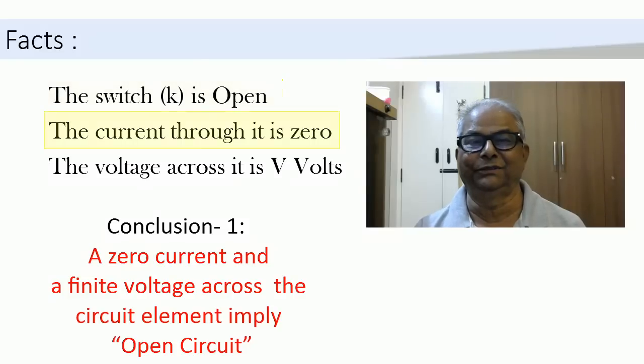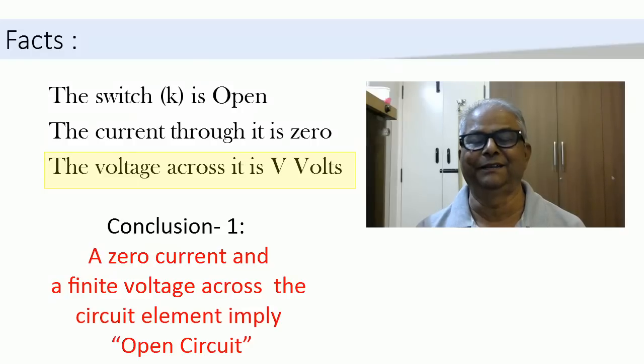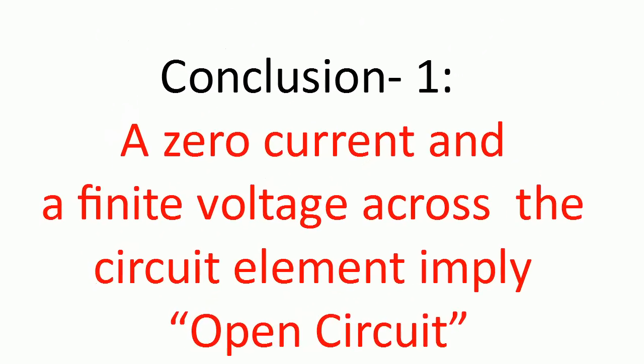The switch is open: current through the switch is zero, and voltage across the switch is V volts. A zero current through a circuit element and a finite voltage across it imply open circuit. We have taken here a switch as an example. This concept can be extended to any circuit element in a network.